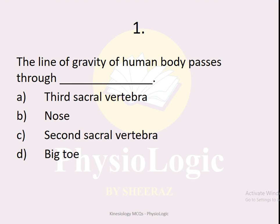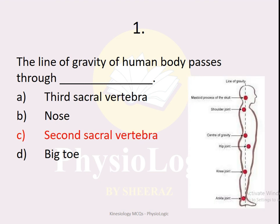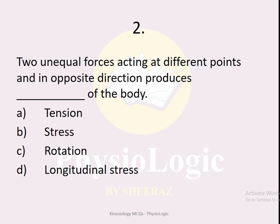MCQ number one: the line of gravity of the human body passes through which of the following — third sacral vertebra, nose, second sacral vertebra, or big toe? The correct answer is second sacral vertebra. The line of gravity passes through your earlobes, shoulder joint, second sacral vertebra, then hip joint, knee joint, and ankle joint. Also, the center of gravity of the human body is located at the second sacral vertebra.